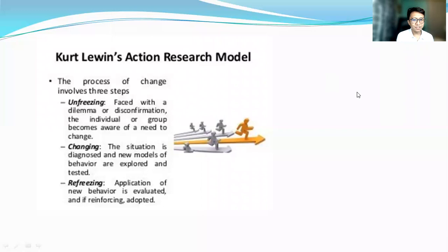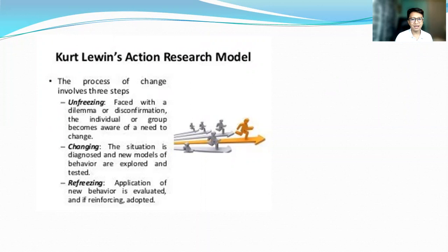The model of action research shows three stages: unfreezing, changing, and refreezing. Unfreezing involves planning; changing is the action; and refreezing represents the results. The process includes preliminary analysis, gathering of data, feedback on results, drawing up an action plan, executing the action plan, learning processes, follow-up actions, and changes in behavior. Data gathering and measurement of results allow us to see if there is a change in behavior. If there is no change, we proceed to action again, and the loop continues.